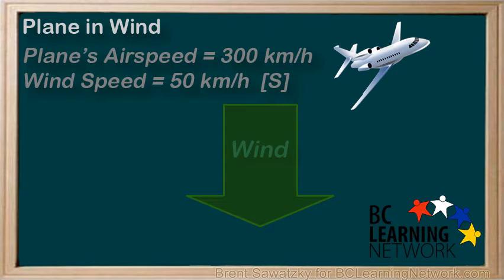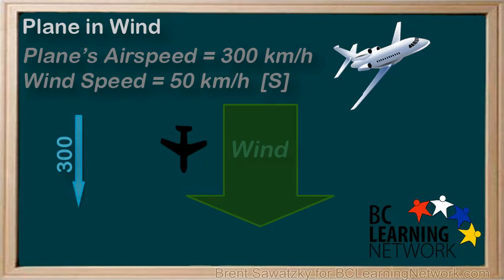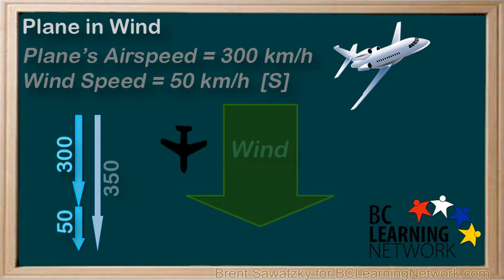Let's talk about some different scenarios. What's the fastest ground speed available to this plane? That is, what's the fastest the plane can travel as viewed from someone standing on the ground below? This fastest ground speed could be achieved by flying in the same direction as the wind. The vector diagram would include the plane speed and the speed of the air, head to tail, and the resultant vector would be a total speed of 350 kilometers per hour.